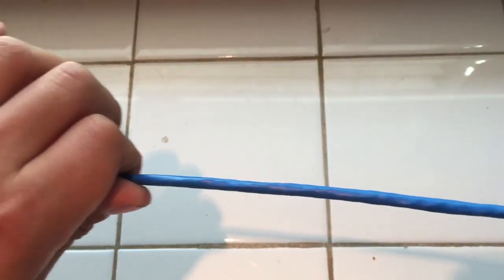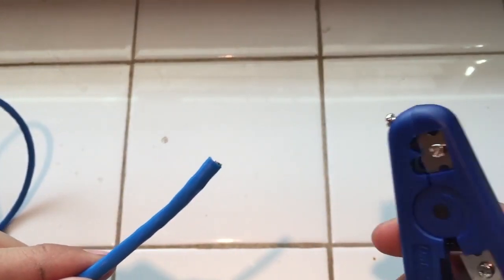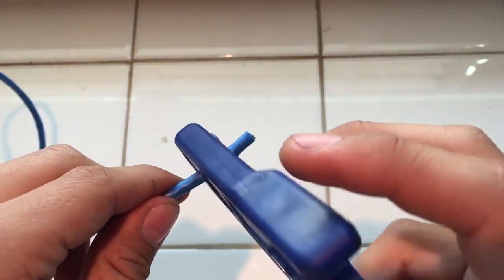So you want to start by measuring out your cable. Once you've done that, cut your cable. Once you're done cutting the cable, go ahead and strip off about a half an inch of the housing.